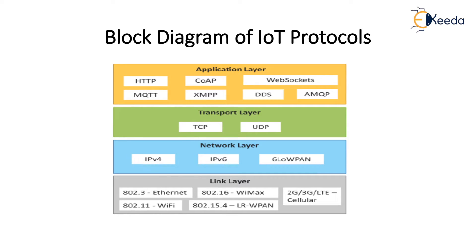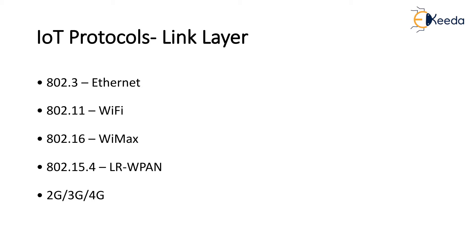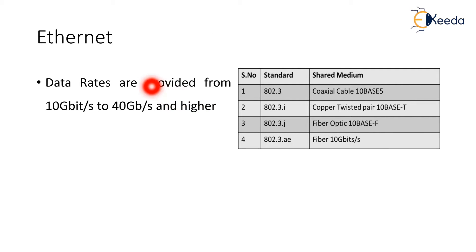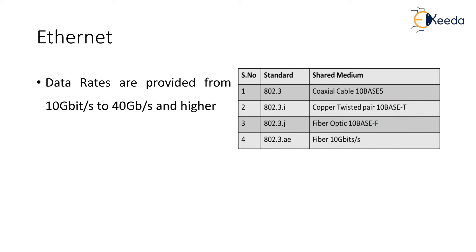The protocols available for the link layer are: Ethernet, WiMAX, Cellular, Wi-Fi, and LR-WPAN. Ethernet is IEEE 802.3, a collection of wired Ethernet standards for the link layer. For example, 802.3 is the standard for 10Base5, which uses coaxial cable as a shared medium. 802.3i uses copper twisted pair — 10BaseT. The shared medium in Ethernet can be a coaxial cable, twisted pair wire, or optical fiber.